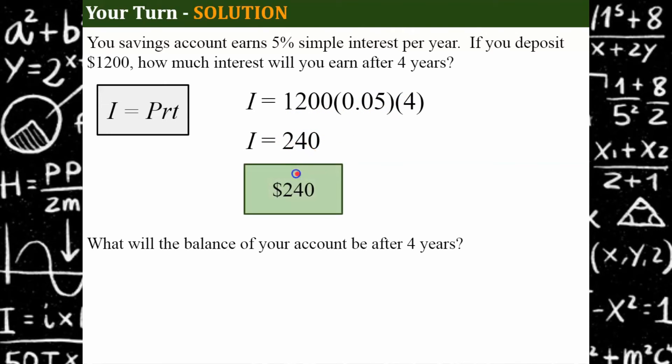Now you're being asked, what is the balance of your account after four years? So remember our balance is our principal plus our interest, giving us a final total of $1,440.